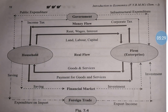Now we will understand with the help of a diagram. Point one: household is the owner of factors of production — land, labour, and capital. Household will sell all factors of production to the firm, and in return the firm will give money to the household in the form of rent, wages, and interest. Money passes from firm to household. With the help of factors of production, the firm produces goods and services and then sells them in the market.